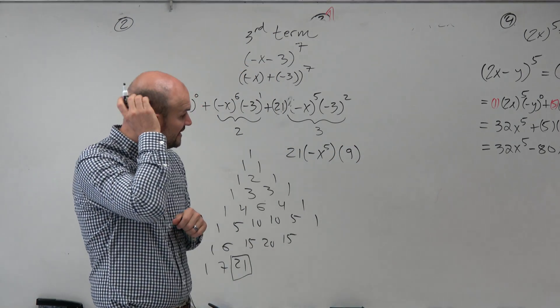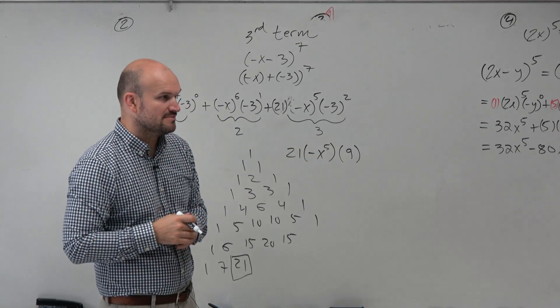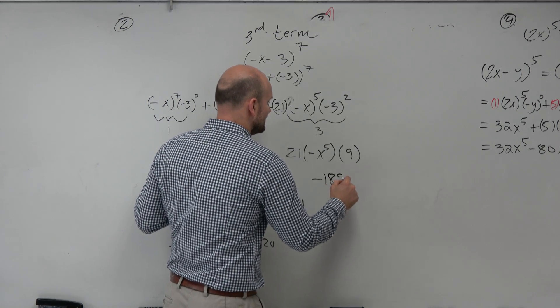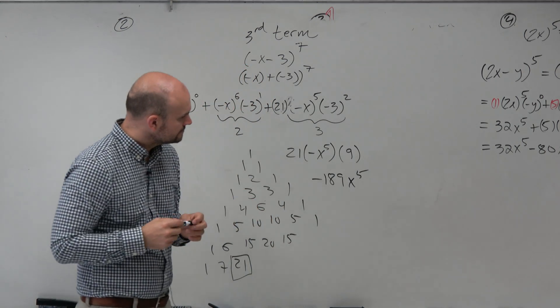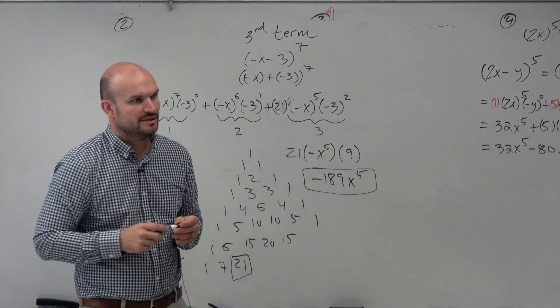So now we have 21 times negative 1, right? Because that's the coefficient. So 21 times negative 1 times 9, which is negative 189 x to the fifth. And that is the third term that I would be looking for.